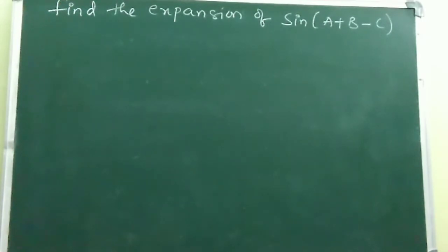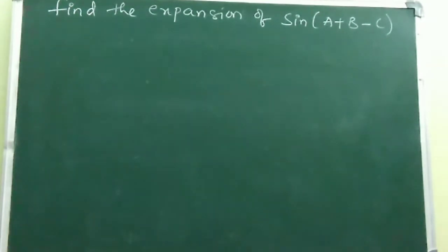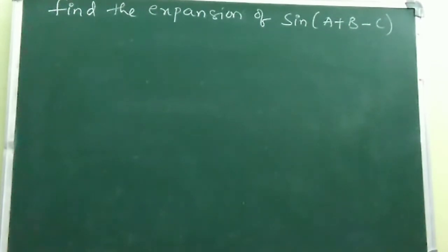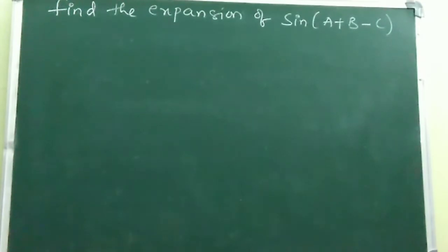Next question: find the expansion of sin(A + B - C). Method one: we already discussed the formula for sin(A + B + C), so just replace +C with -C in the formula. But if you have forgotten the formula, no problem — we can still work it out.